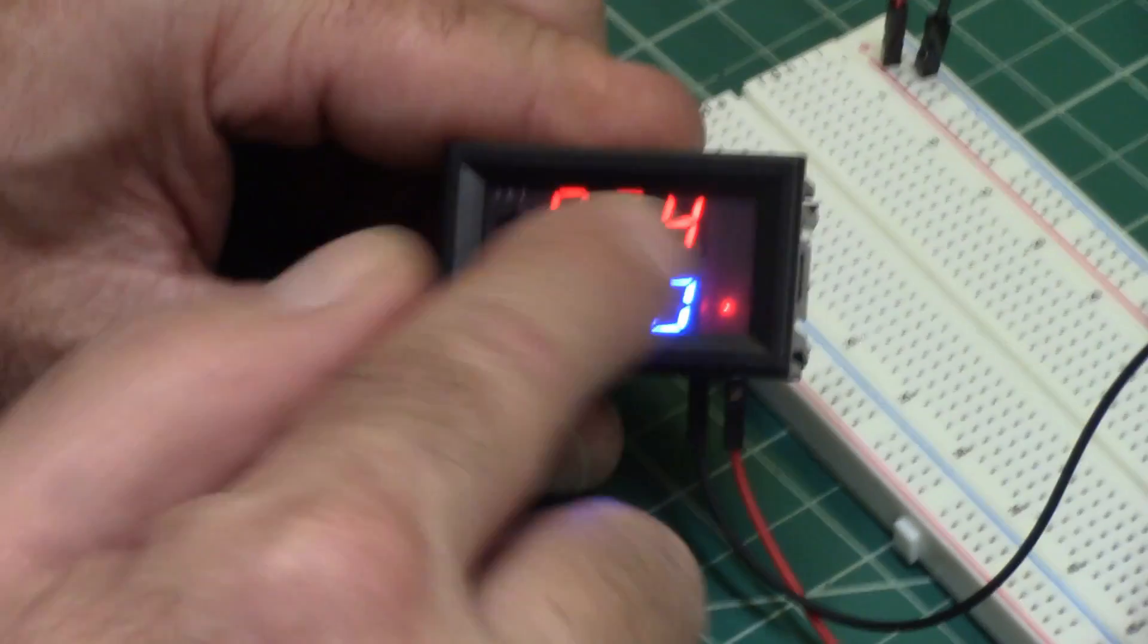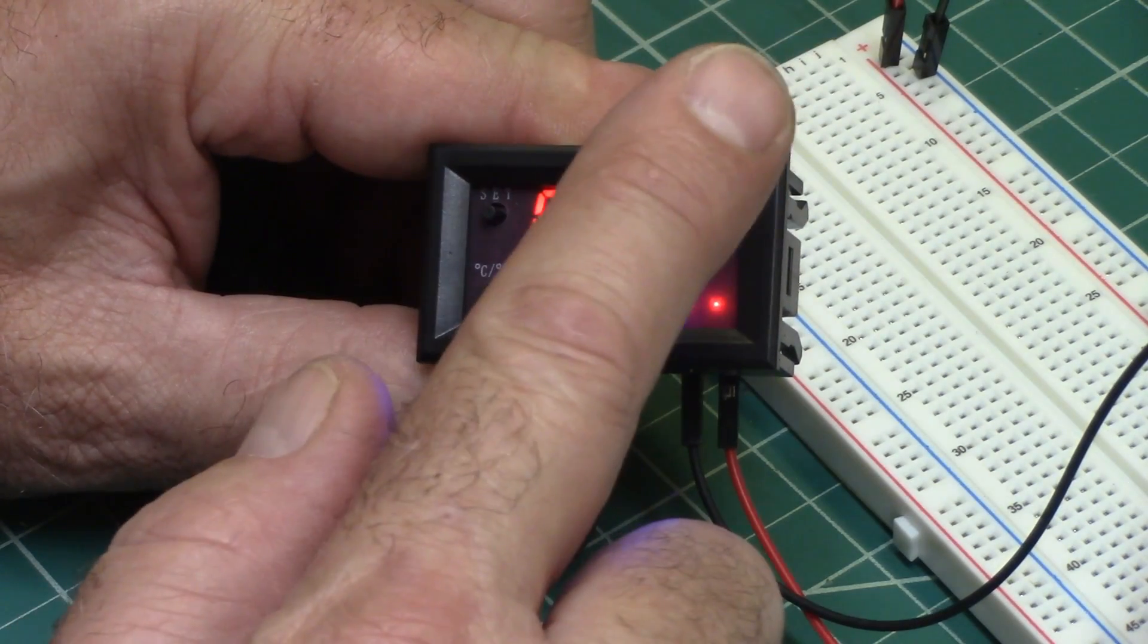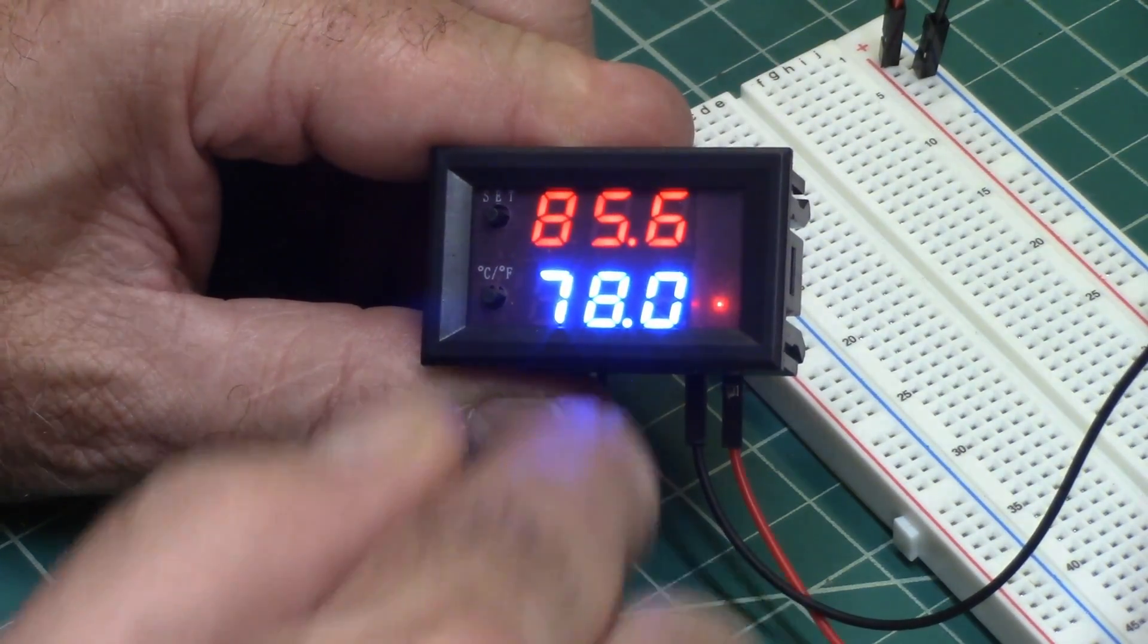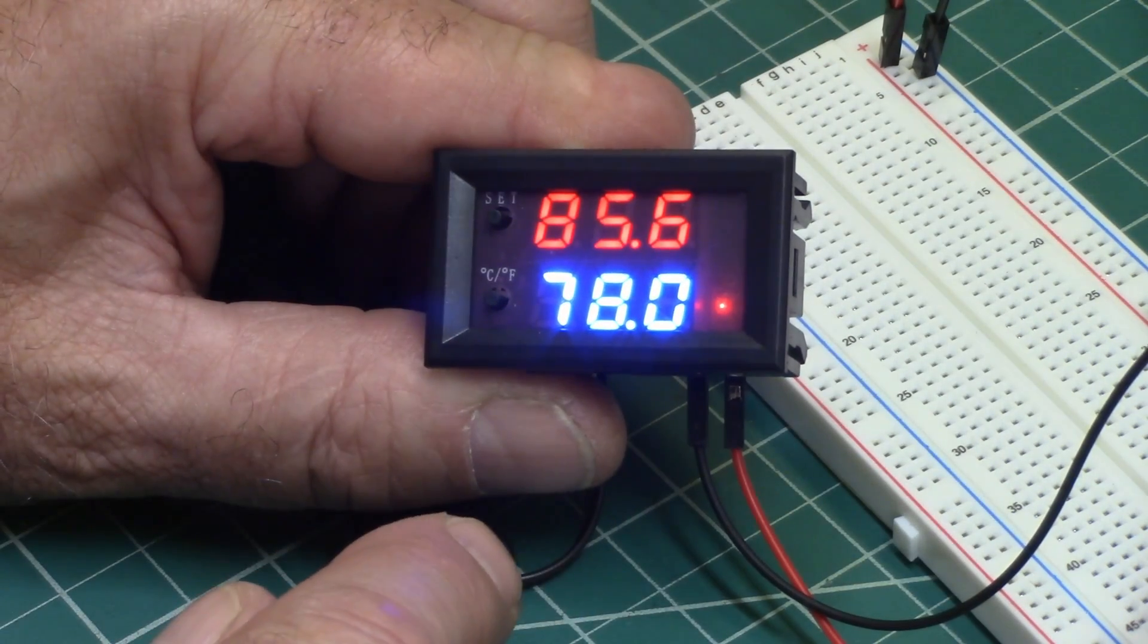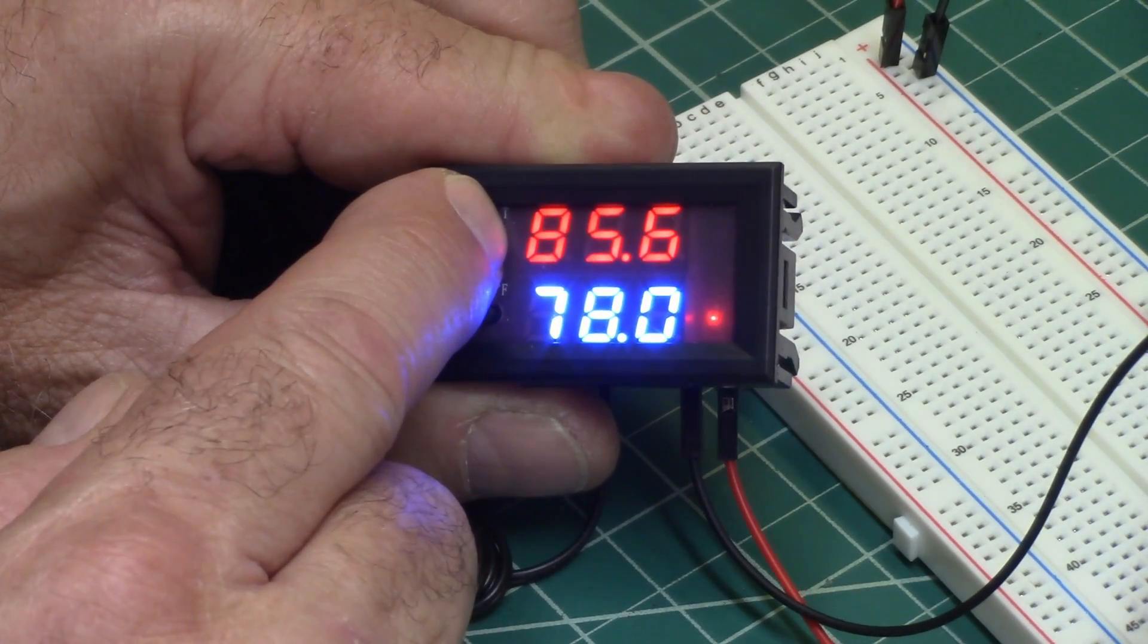Because you don't want something that's going to bring it down to 78, and then when it hits 78.1, it's going to come on, and then at 78 it's going to go off. And it'll be cycling back and forth really fast, and wear your equipment out. So you want to have like a degree or two, at least, difference.